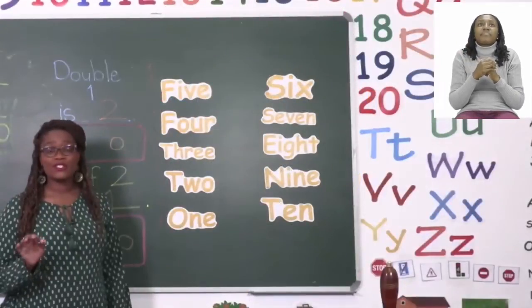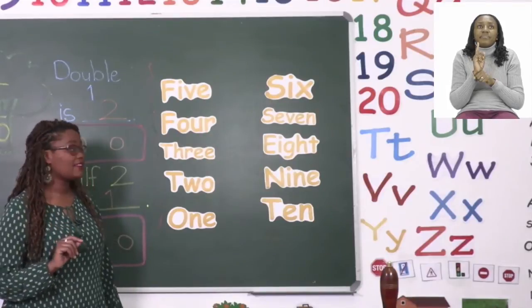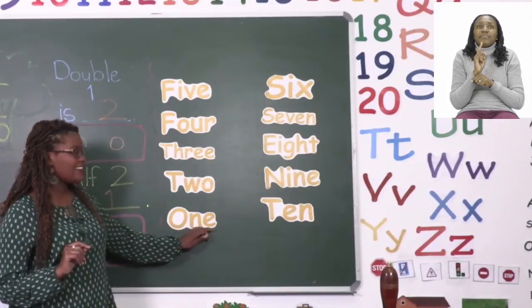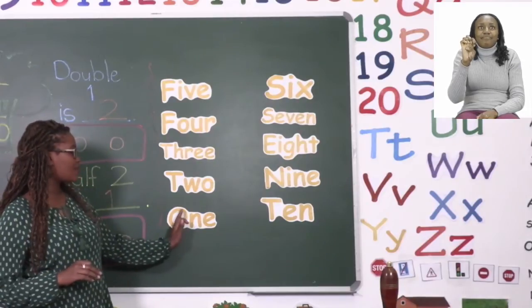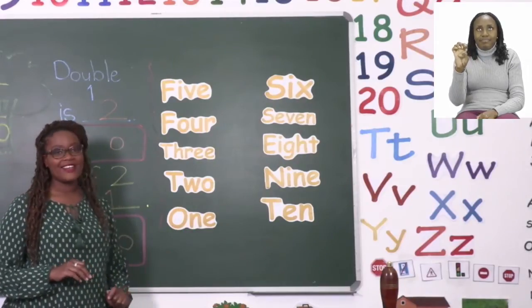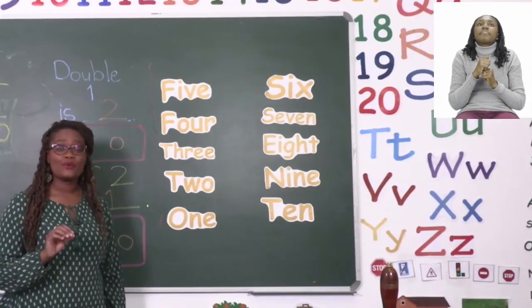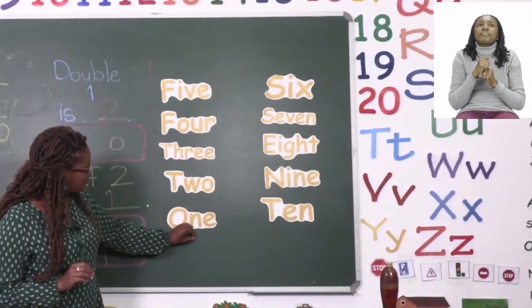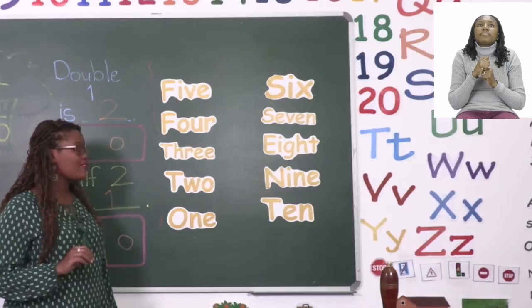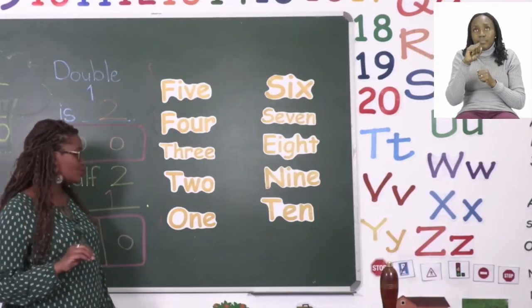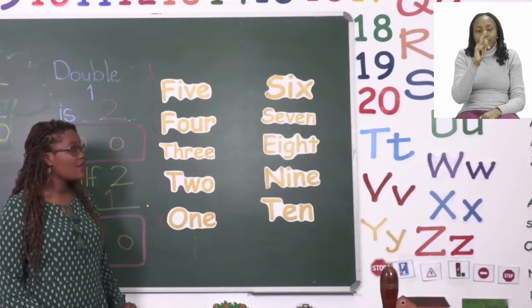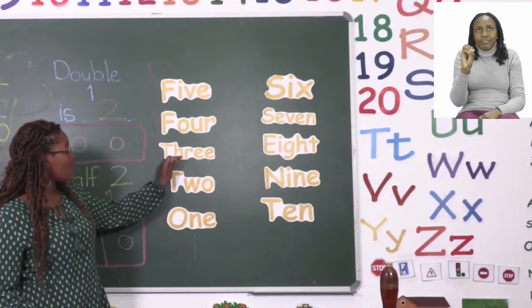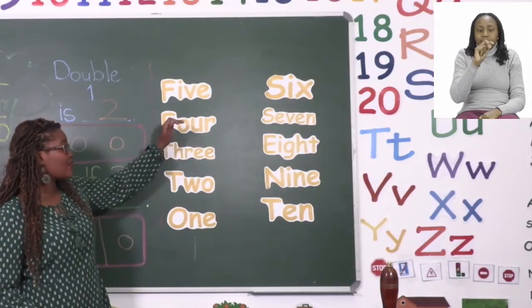So the first number that I want you to write under the number one is one. One has a simple name with three letters one, two, three. So go ahead and copy the number one. Then the next one that we have is the number two. Two is very easy to remember as well. The next one after that is three, four,